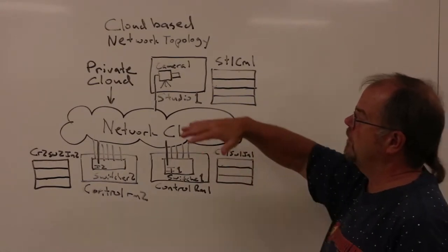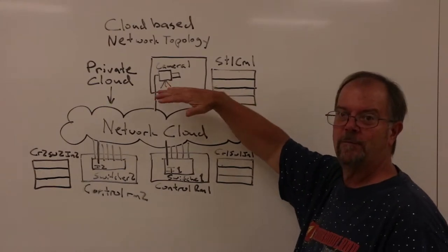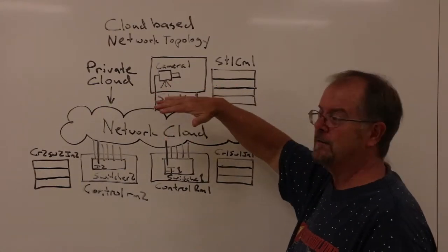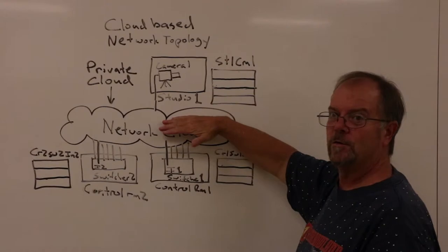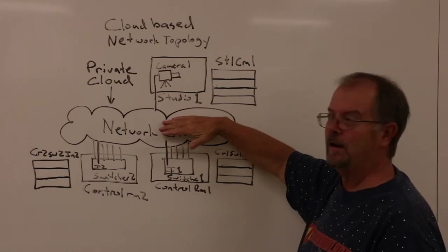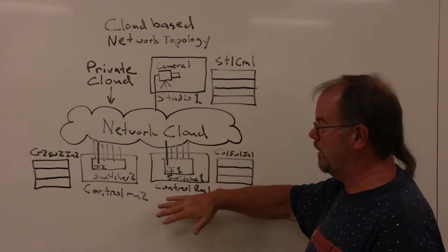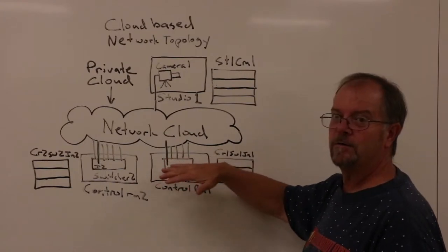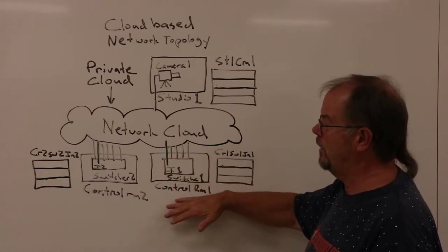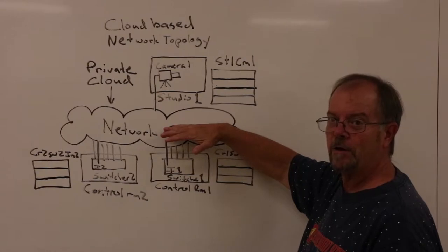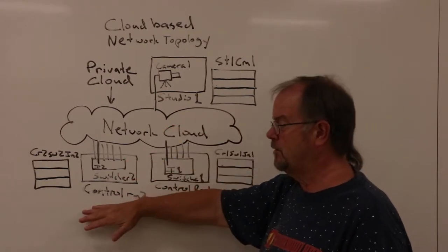Essentially what that means is that all the devices in the studio—all the cameras, monitors, and other equipment—are plugged directly into a common TCP/IP network. Likewise, all the devices in control room 1—the switcher, the monitors, the recorders—are connected to the same network cloud. Same thing in control room 2.